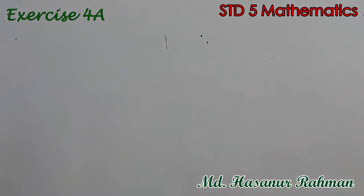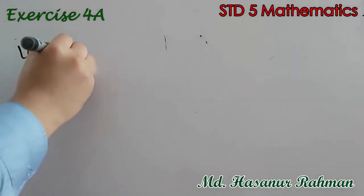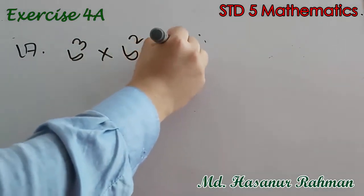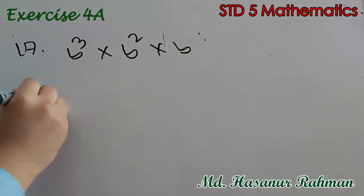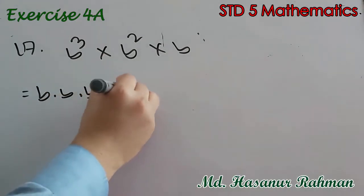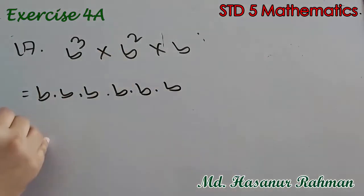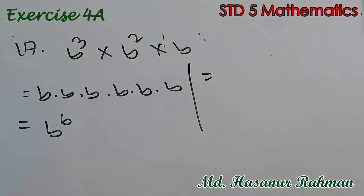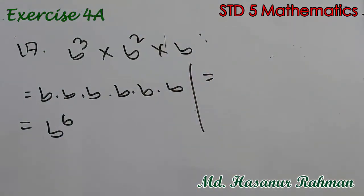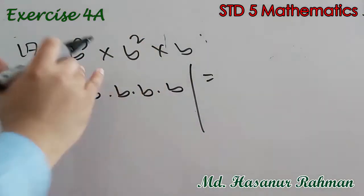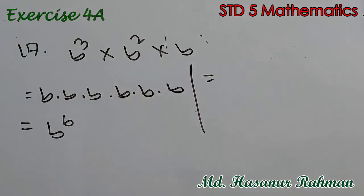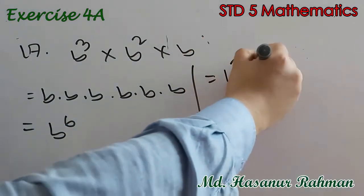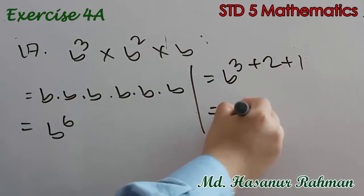Number 17 says b cubed into b squared into b. b cubed means b into b into b, b squared means b into b, and b means b — that gives b to the power 6. Alternatively, since both bases are the same with multiplication signs, we add the powers: b to the power 3 plus 2 plus 1, that is b to the power 6.